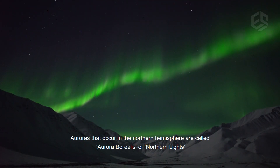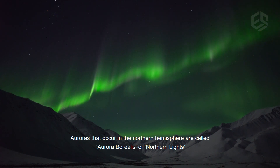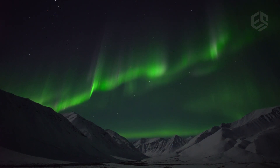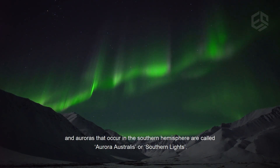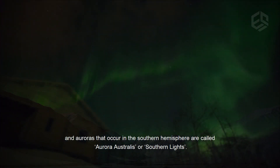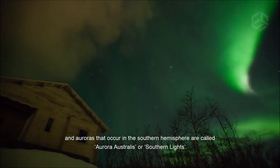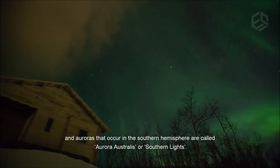Auroras that occur in the northern hemisphere are called Aurora Borealis, or Northern Lights. Auroras that occur in the southern hemisphere are called Aurora Australis, or Southern Lights.